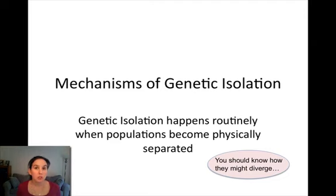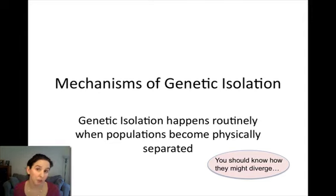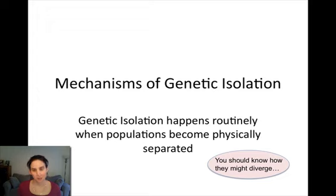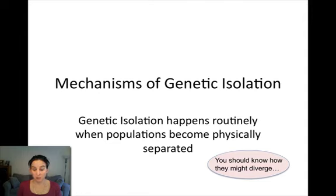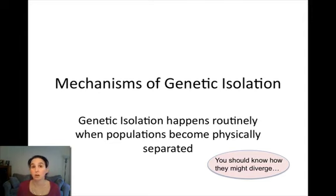You should understand how it is that these genetically isolated populations can then diverge. There are a couple of different mechanisms by which this can happen — genetic drift and natural selection. The first step is genetic isolation: how does a population of organisms become separated from one another? We're going to talk about physical separation first, and then think about what causes divergence.